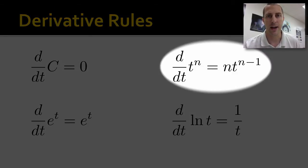Second one, this is one you're going to use a lot. The derivative of t to the power. t is our variable because it's in the bottom of that d/dt. Everything else is some sort of constant. So t to the n equals n times t to the (n-1). You're going to use that a lot.